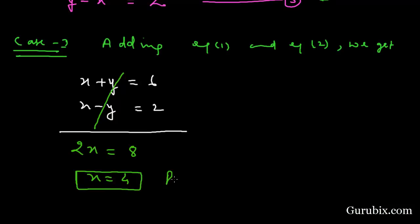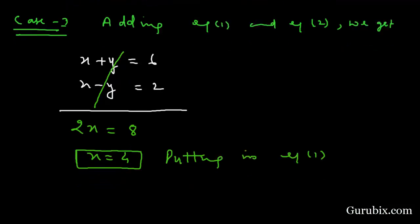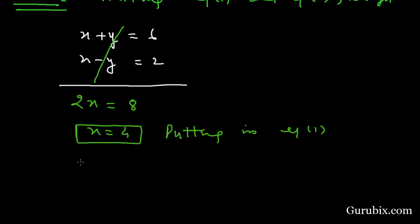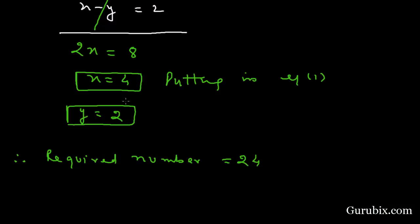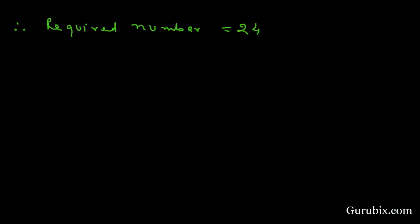Putting X equals 4 into equation number 1, we get Y equals 2. Therefore the required number is 24, because Y is the tens digit and X is the unit digit. Now we shall solve for case 2.